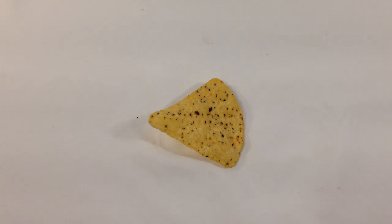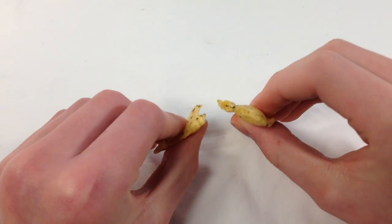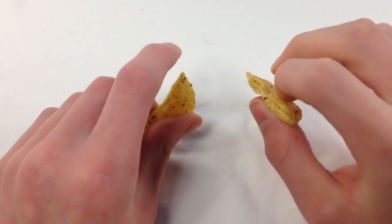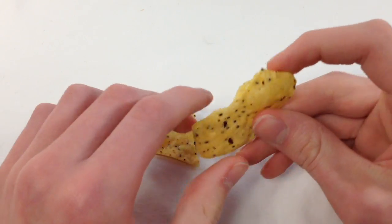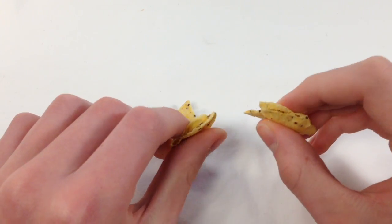When force is applied to a brittle object, it breaks without bending. For example, this chip. It didn't bend, it doesn't have any elasticity. So that makes it brittle. It just breaks without bending.